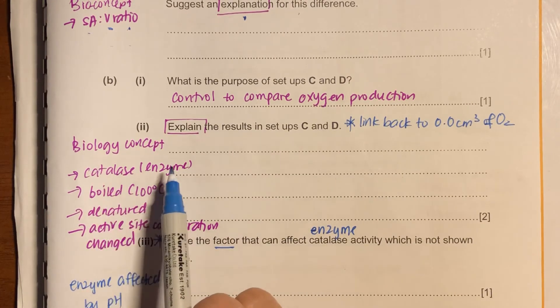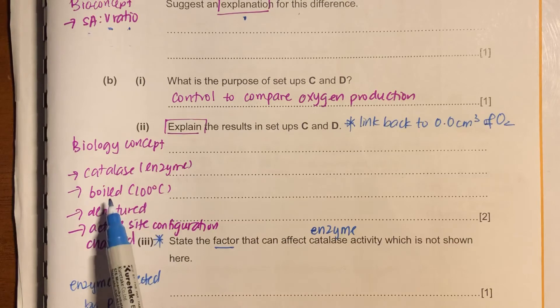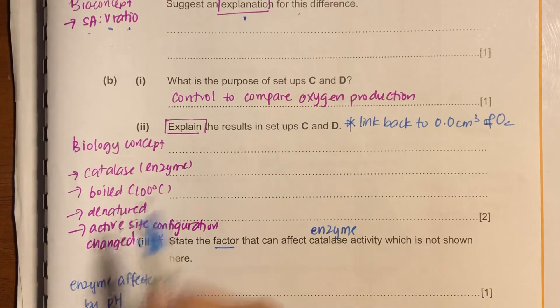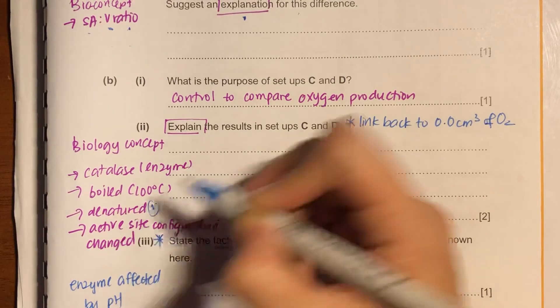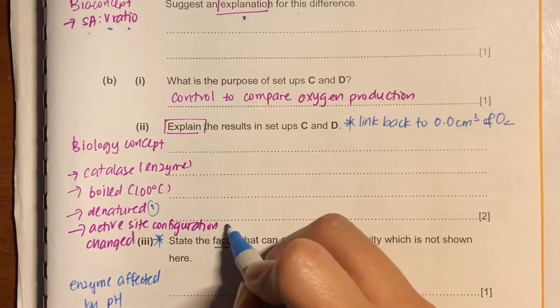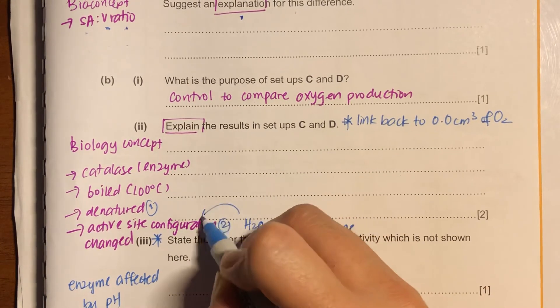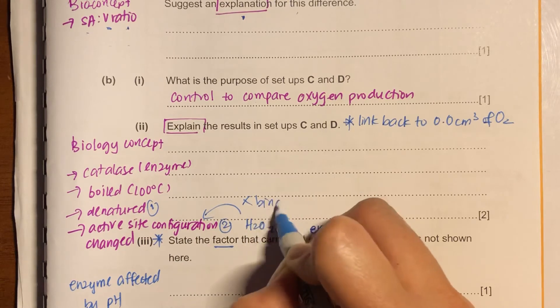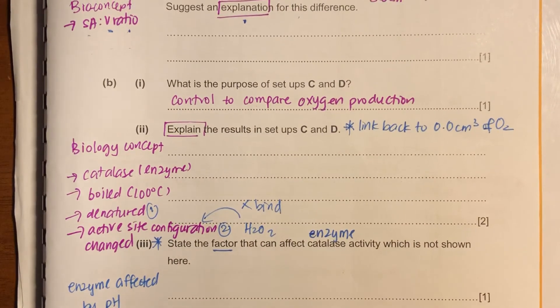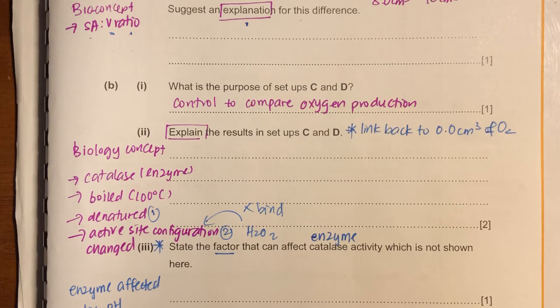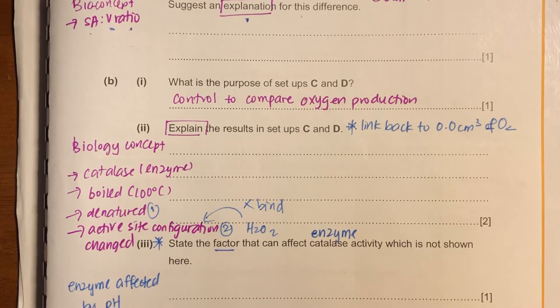So the concept here is about enzymes. And when you boil it, it will be denatured. Number one. And the active site configuration will change. So the hydrogen peroxide will not be able to bind to the active site. I think you know that already. It's about systematically writing your answers.